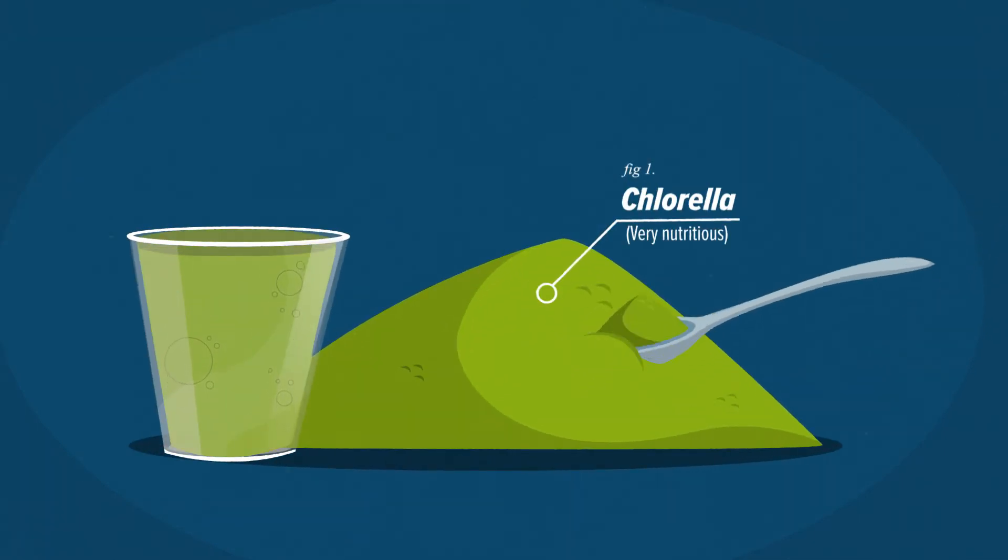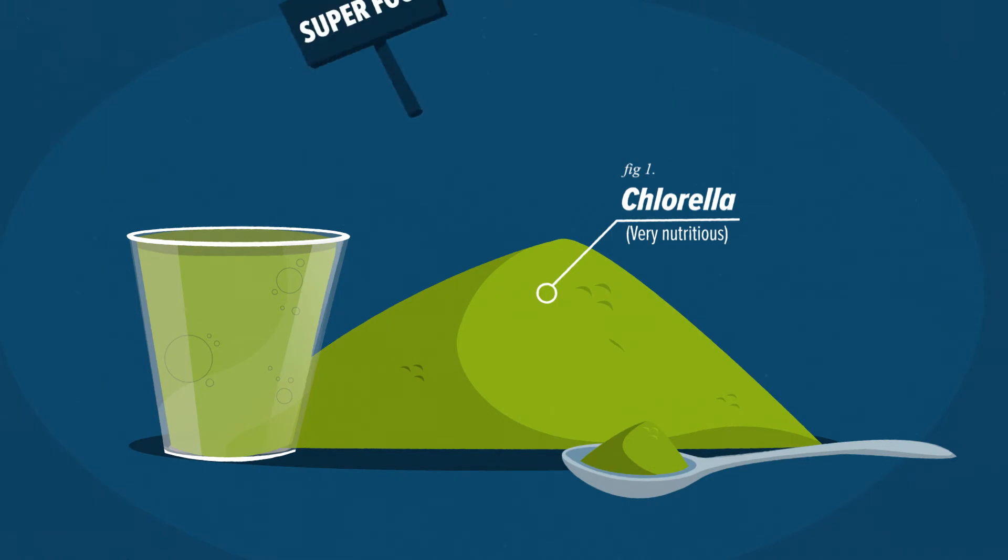Many green algae are unicellular. For example, different chlorella species are well known for their nutritious value and are commonly referred to as superfood.